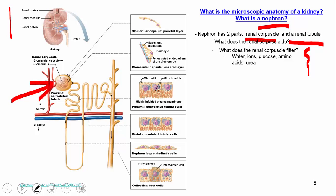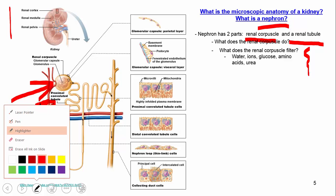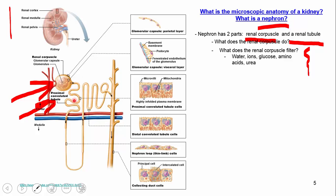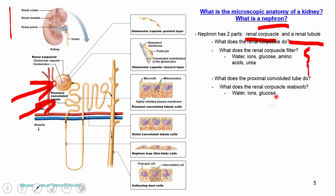The next section after Bowman's capsule is something called the proximal convoluted tubule — this region of the nephron where my laser pointer is. What's happening there is reabsorption. Whenever stuff leaves the filtrate and goes back into the blood, we call it reabsorption — water, ions, and glucose are all being reabsorbed here in the proximal convoluted tubule.